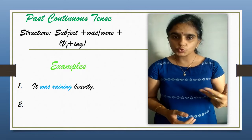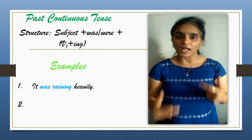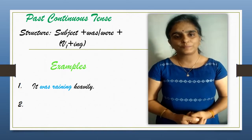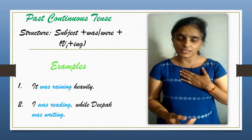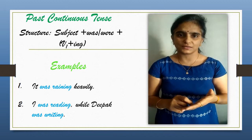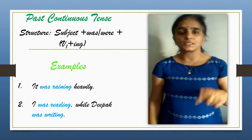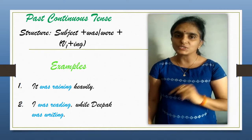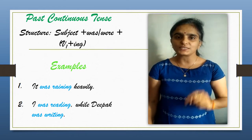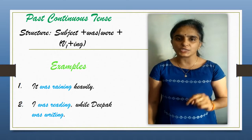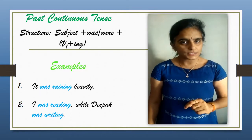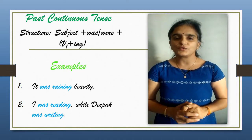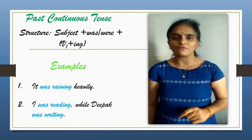Instance two: it is used to show two actions in continuity being performed at the same time in the past, like I was reading while Deepak was writing. Here, simple past and past continuous tense play very important roles. Only past continuous tense provides appropriate structure to understand this kind of event. I again emphasize the addition of ing along with first form of verb to depict the continuity of action.